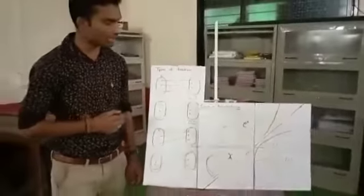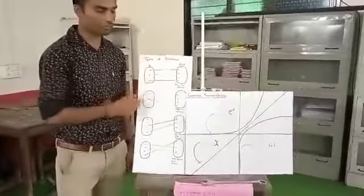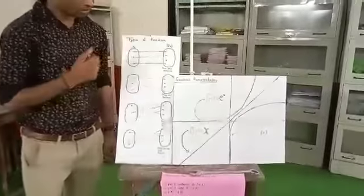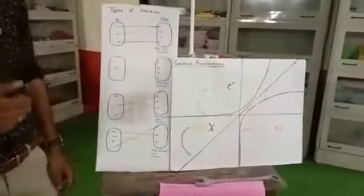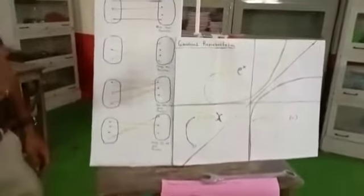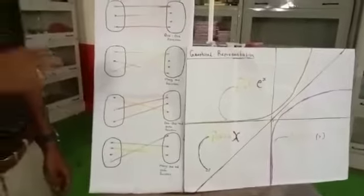In the function, basically we have 4 types: 1-1 function, many-1 function, 1-1 and onto function, and many-1 and onto function.